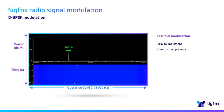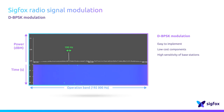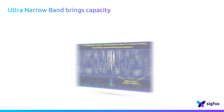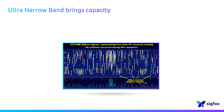Thirdly, the base station receiver is highly sensitive, as it can demodulate signals that are very close to the noise floor without any coding layer. This spectrum analysis shows the transmission of 210 ultra-narrow band SICKFOX signals. These signals only represent 4% of the radio resource.